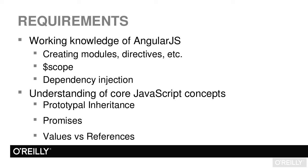As far as core JavaScript concepts go, you'll want to really know how prototypal inheritance works and some of the differences between reading and writing to certain properties and values as you go up and down the object tree. Secondly, the concept of promises and how they're used to handle data coming back from asynchronous callbacks, and when you may or may not want to actually use them. Finally, you'll want a good understanding of the difference between passing by value and passing by reference.